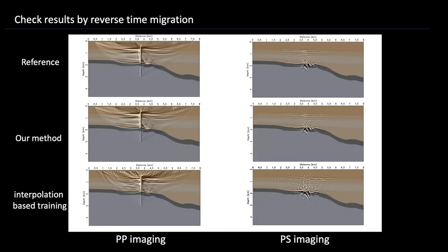Here is from another perspective to evaluate the separation results. We apply reverse time migration to the separated P and S waves. PP images on the left reflect P wave quality, and PS images on the right reflect S wave quality. Also compared to the reference on the top, images using our method is better than the results from interpolated based learning. Most of the structure remains, and they are not blurred by the separated errors.